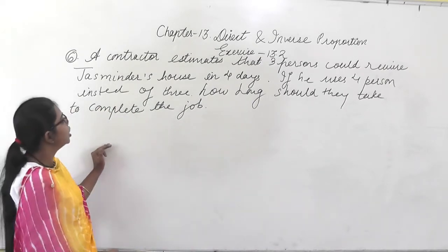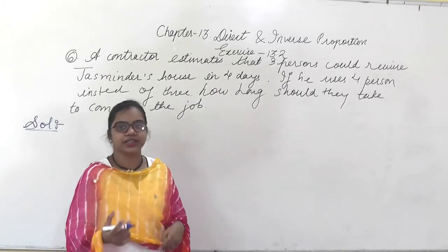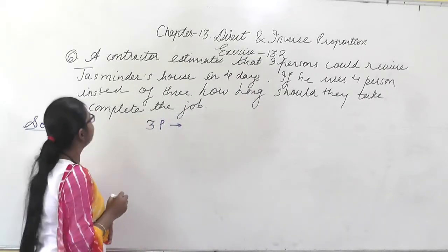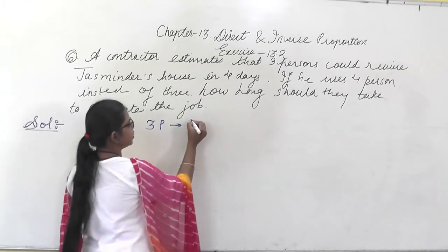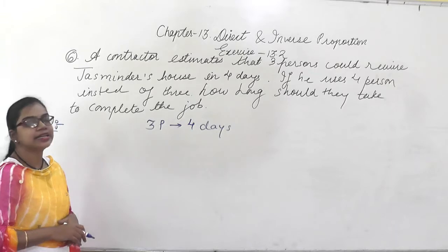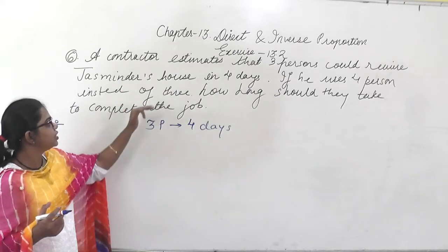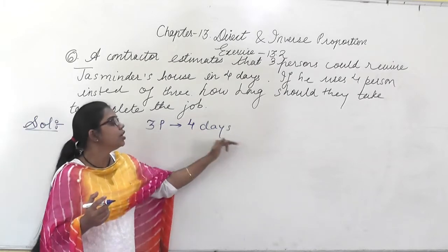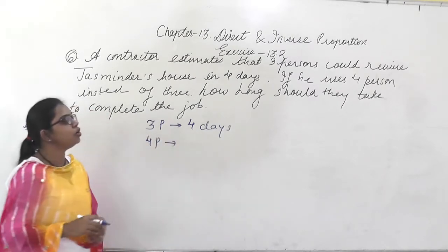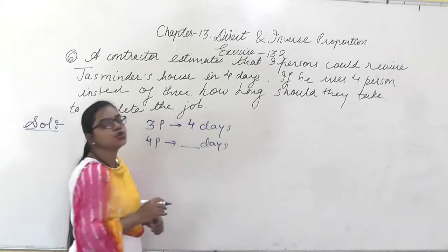In this question it is saying: a contractor estimates that 3 persons could revive Jasminder's house in 4 days. So 3 persons will complete the revival in 4 days. If he uses 4 persons instead of 3, you have to find out how long they should take to complete the job — that is, the number of days.